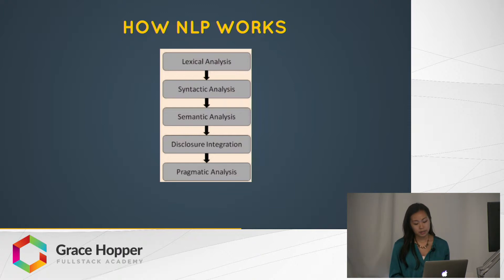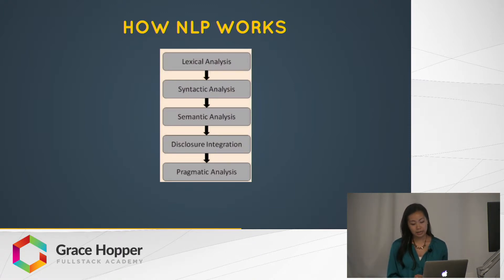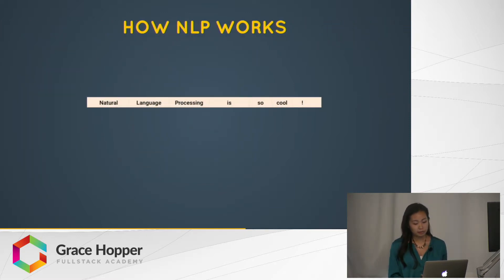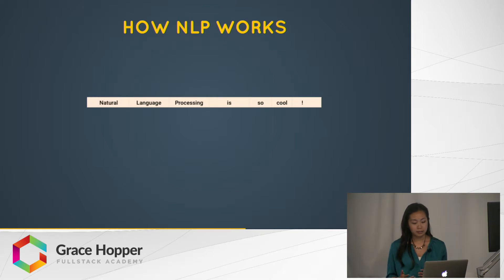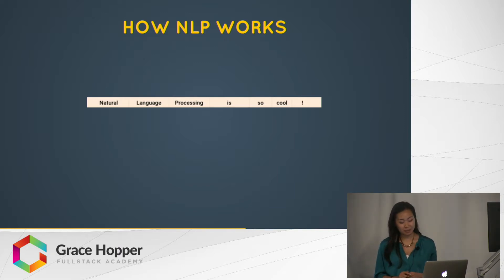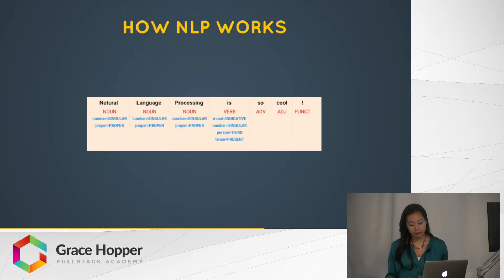As you can see, natural language understanding involves a lot more than just recognizing a string of text. But let's focus on an example and try to break down a sentence syntactically as a machine would. Looking at the sentence, we'll assume that at this point a machine has broken it down into three phrases using lexical analysis: 'Natural language processing is so cool.' It then parses through each word, assigning it a part of speech tag, which describes the word's syntactic function.